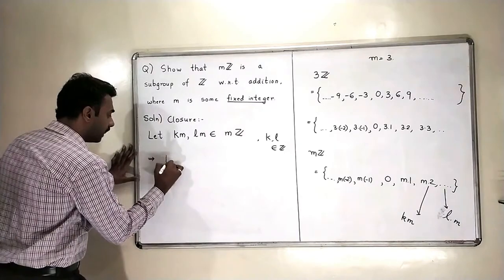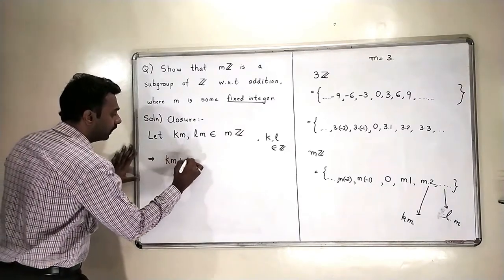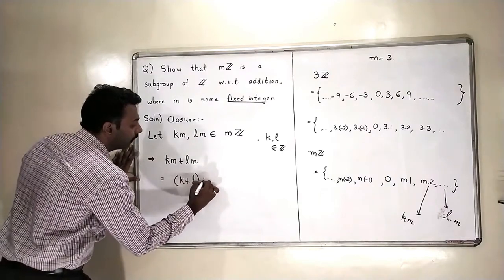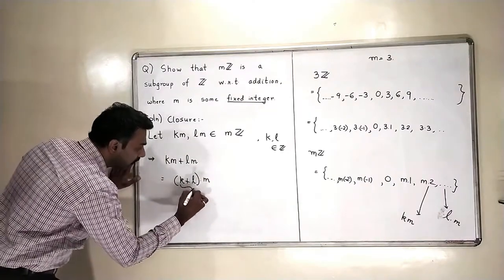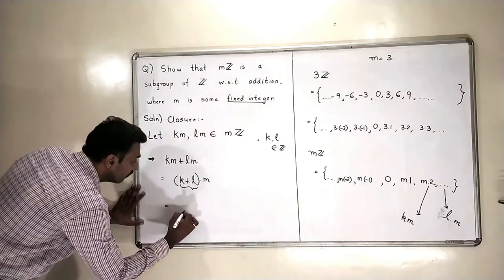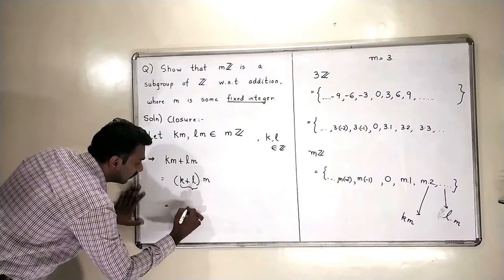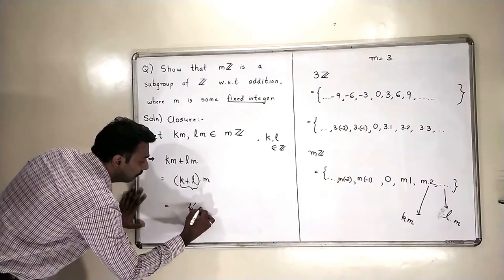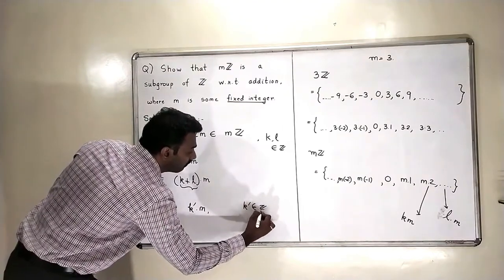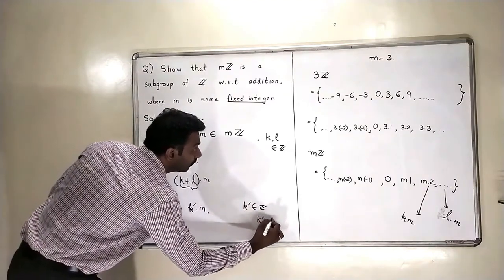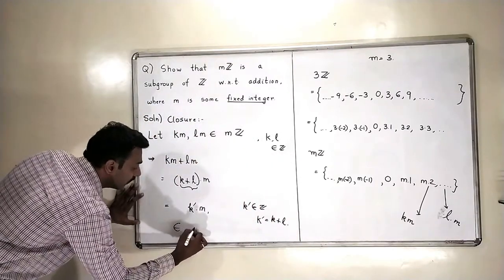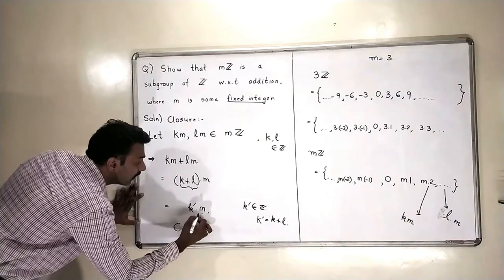Then, what is the addition of km plus lm? km plus lm is equal to k plus l multiplied by m. So, this is again some integer because k and l are integers. So, k plus l is also an integer. So, this will look like some k dash times m. Then, what is k dash? k dash is also an integer where k dash is actually equal to k plus l.